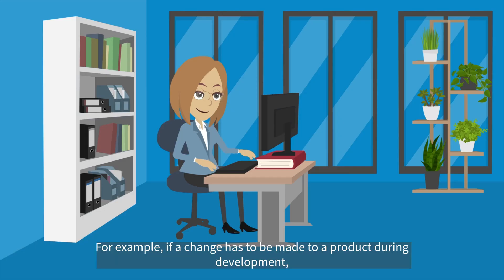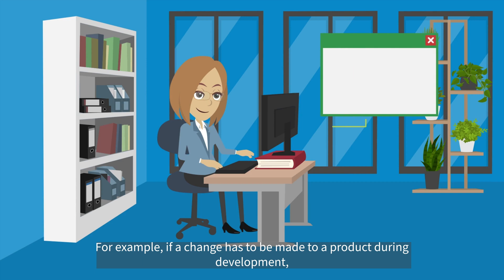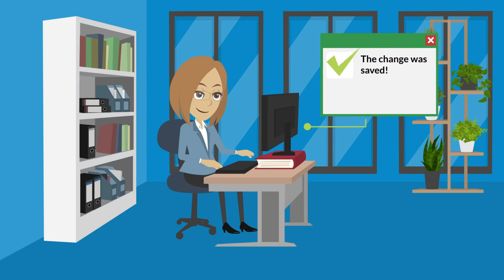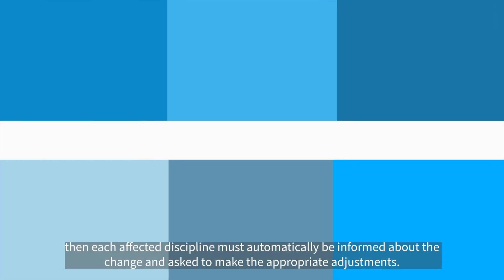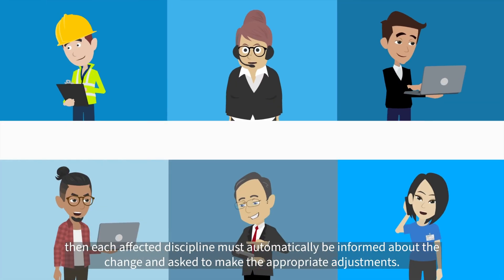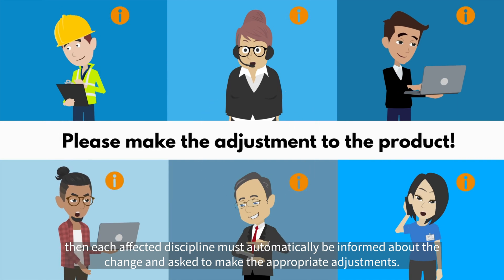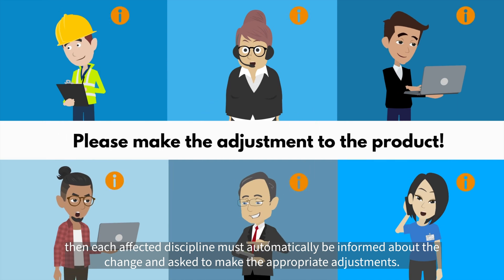For example, if a change has to be made to a product during development, then each affected discipline must automatically be informed about the change and asked to make the appropriate adjustments.